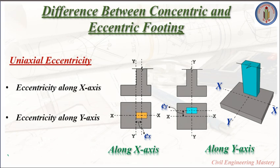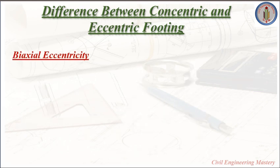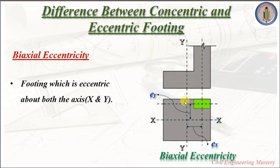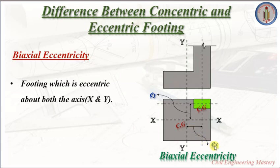In uniaxial eccentricity, the footing will be eccentric about either the x direction or the y direction. Next is biaxial eccentricity. In biaxial eccentricity, the footing is eccentric about both the x-axis and the y-axis. You can see from this figure that the column center of gravity is moved away from the footing center of gravity in the x-axis as well as in the y-axis — this is the eccentricity due to x-axis and this is the eccentricity due to y-axis.